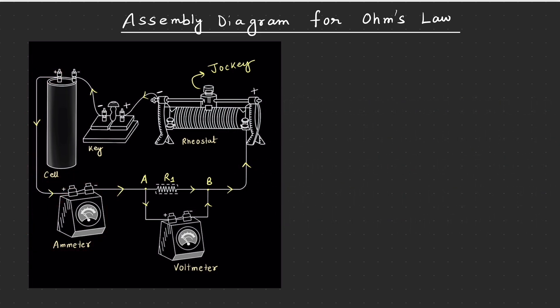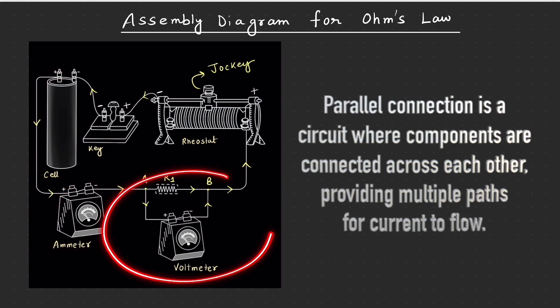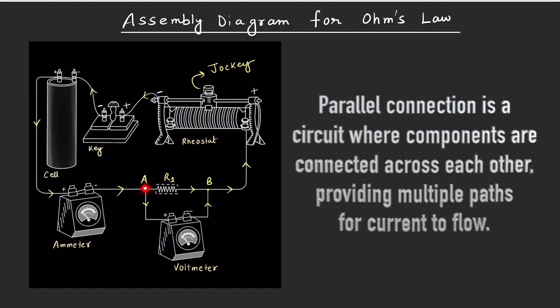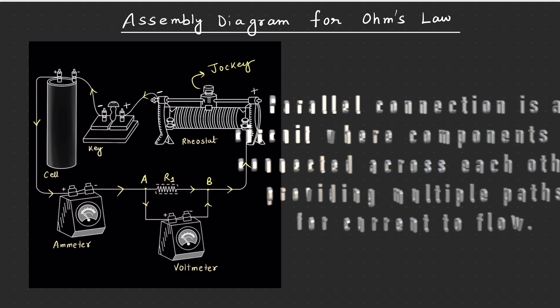On the other hand, parallel connection is such a situation jahaan par the current is made to get divided. Kuch current sidha ja raha hai, toh kuch current niche ke taraf ja raha hai towards the voltmeter. Jis makaam par ap dekhenge ki current divide ho raha hai, that kind of connection is called a parallel connection.